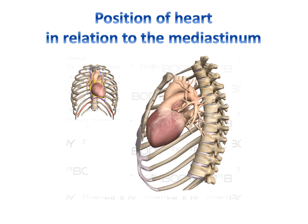When looking into the rib cage from the left lateral view, you will discover the heart is placed in the anterior portion of the thoracic cavity.